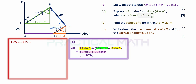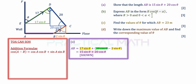Moving on to part B, we have to express AB = 15 sin theta + 20 cos theta in the form R cos(theta minus alpha), where R is positive and alpha is acute, in the range 0 to pi over 2 radians. The R formula is derived from three formulas: the addition formula cos(A minus B) = cos A cos B + sin A sin B, the trigonometric ratio tan theta = sin theta over cos theta, and the Pythagorean identity sin squared theta plus cos squared theta equals 1.